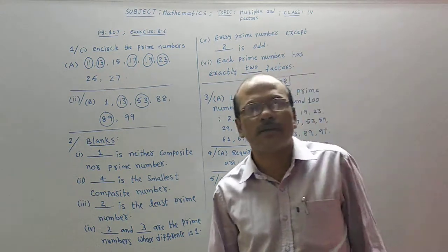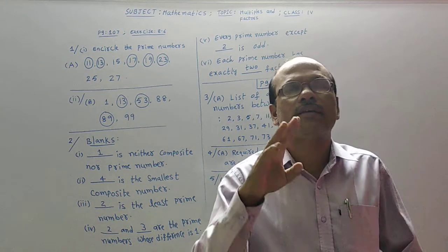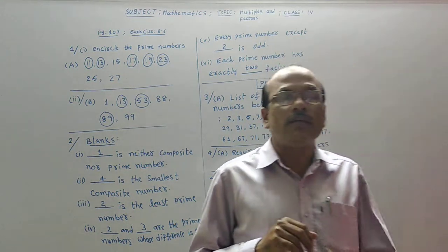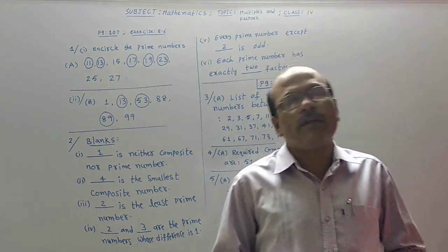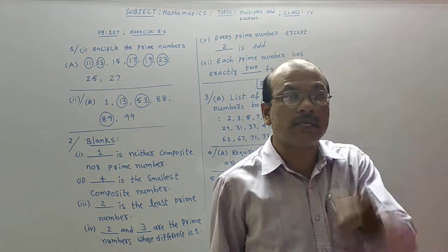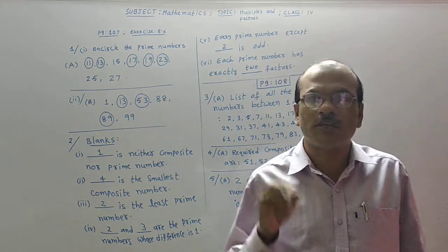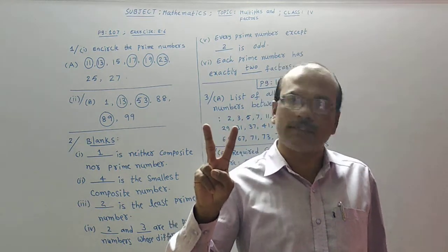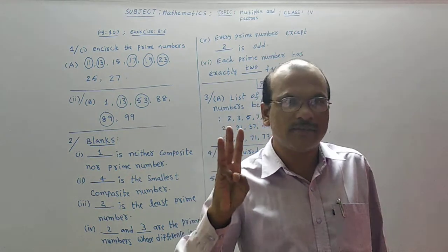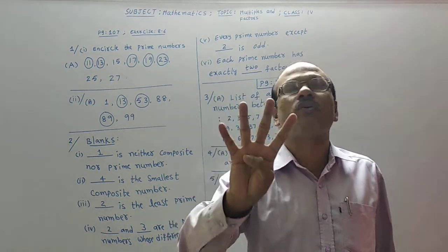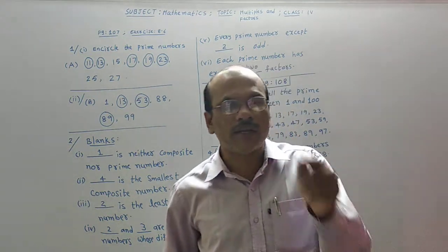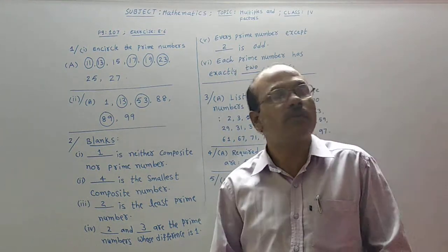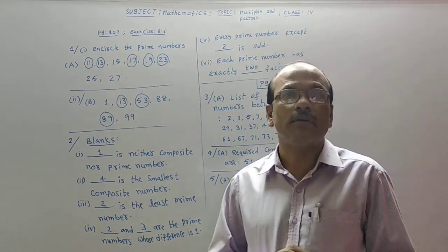About composite numbers: if a number is having at least 3 factors, then such a number is called a composite number. Suppose 8 — 8 is having more than 3 factors. In the 1 times table, 1×8=8. In the 2 times table, 2×4=8. In the 4 times table, 4×2=8. In the 8 times table, 8×1=8. So 4 factors are there for 8. If any number is having more than 2 factors, such a number is called a composite number. These definitions are available in the book also — we should memorize them forever.